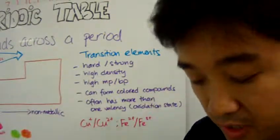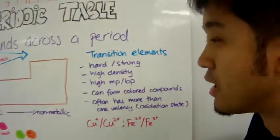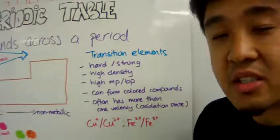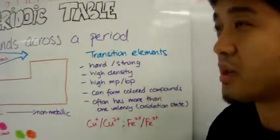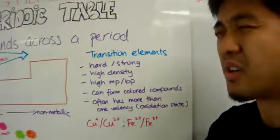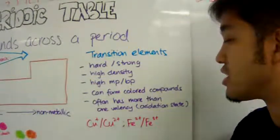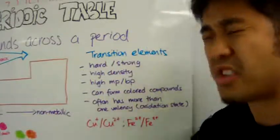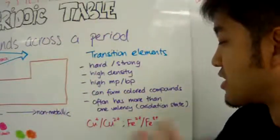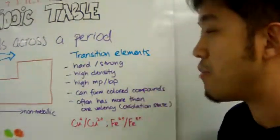And a very interesting thing about transition elements is that it forms colored compounds like hydrated salts. Copper has this blue color, cobalt has pink, iron, depending on its valency or oxidation states, green or rust color. So it's kind of cool.